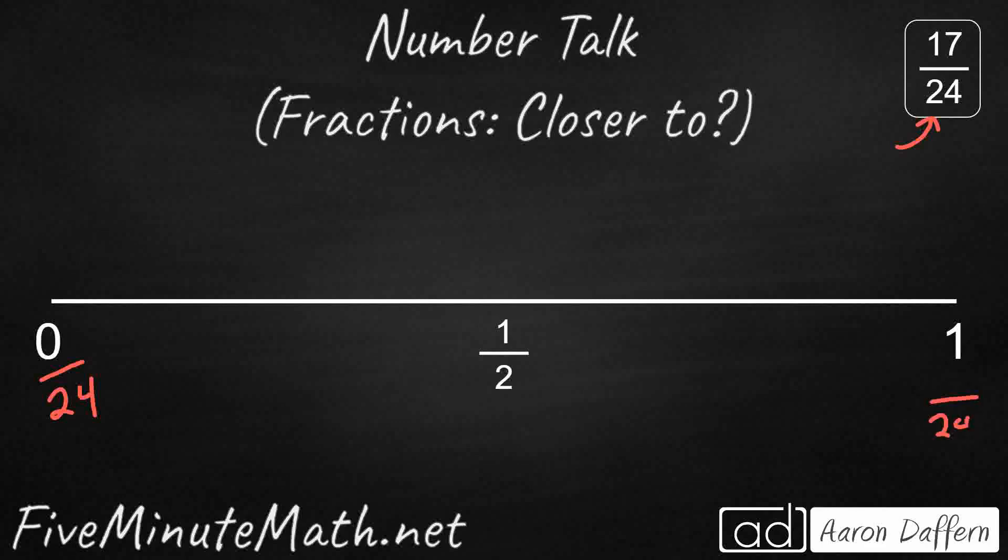And then 1 is also pretty easy, because you just need to match the numerator and the denominator. Any fraction that has the same numerator and denominator, 24/24, 8/8, 3/3, 2/2, 4/4, doesn't matter. They're all equal to 1. One whole is when you have the same numerator and denominator.